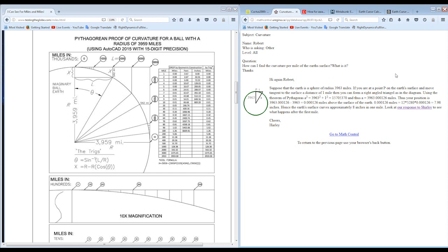This is a website called mathcentral.oregina.ca. You see the URL here. They're talking about how can I find the curvature per mile of the Earth's surface, and they give an answer right here.